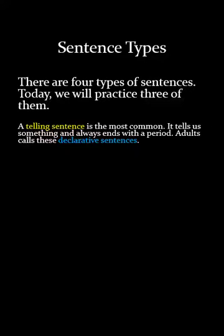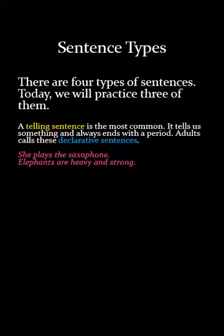The first one is a telling sentence. A telling sentence is the most common — it tells us something and always ends with a period. Adults call these declarative sentences. Don't worry if you can't remember that, but it is good to know these things have real names. Something like 'She plays the saxophone' or 'Elephants are heavy and strong' — they just tell us some information and end in periods.